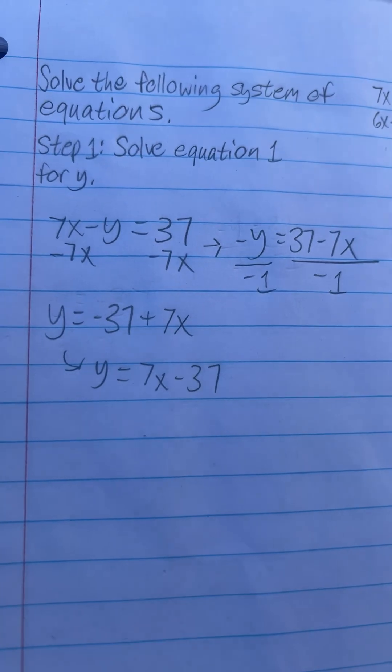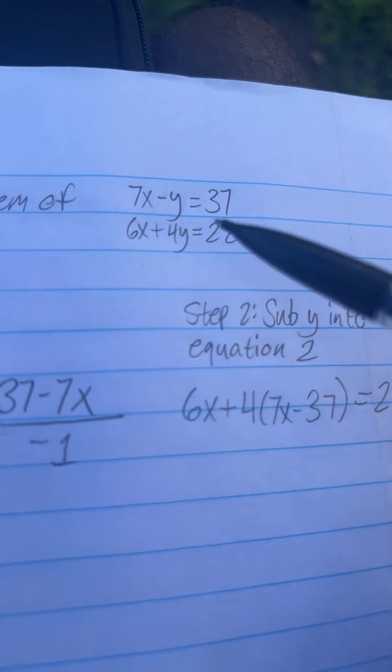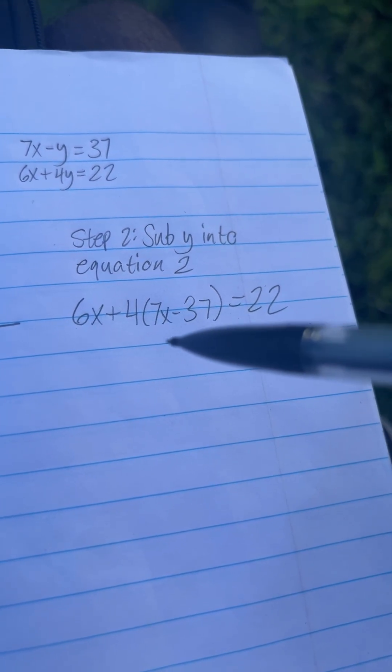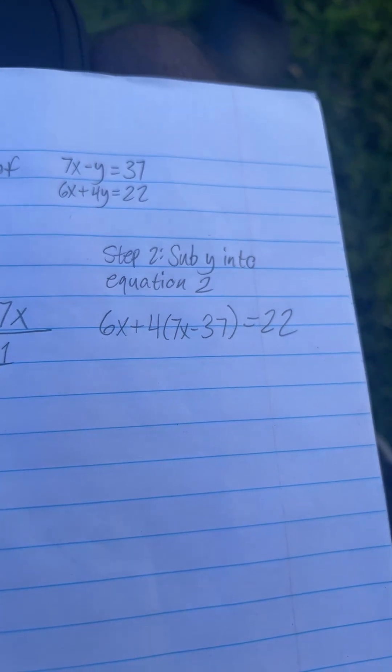Step 2 is to sub y into equation 2. So we found y, and we're subbing it into equation 2. 6x plus 4y equals 22 to get 6x plus 4 times 7x minus 37 equals 22.